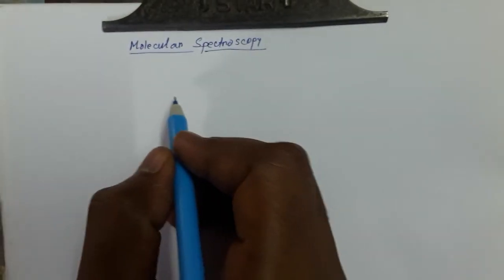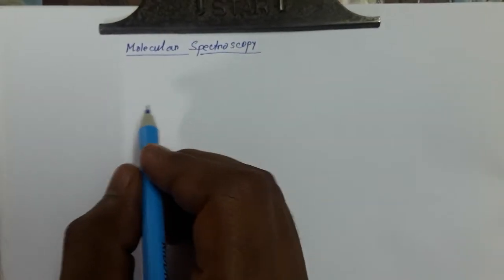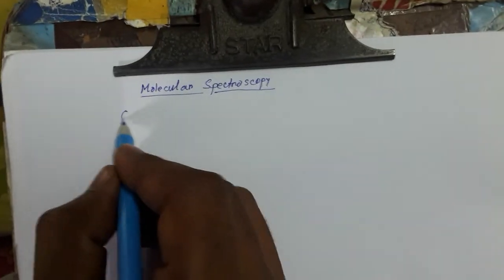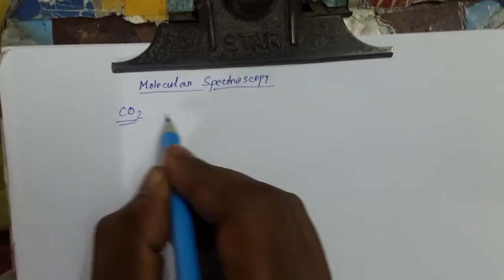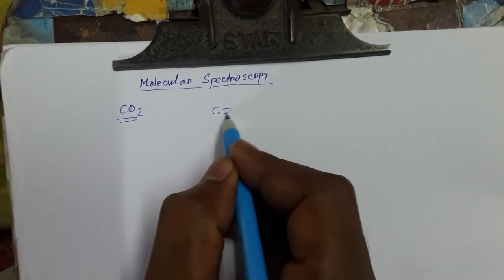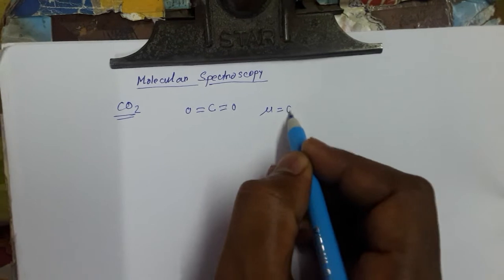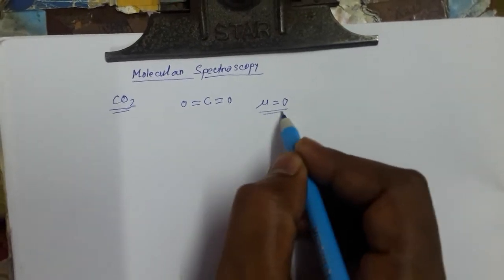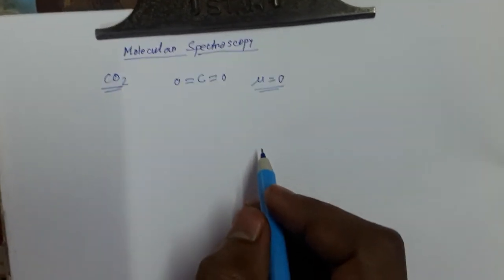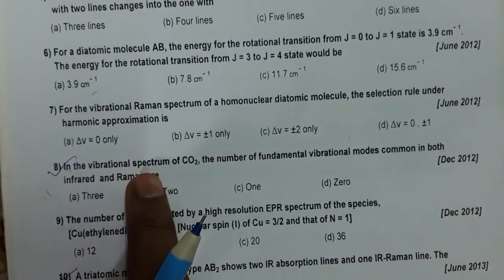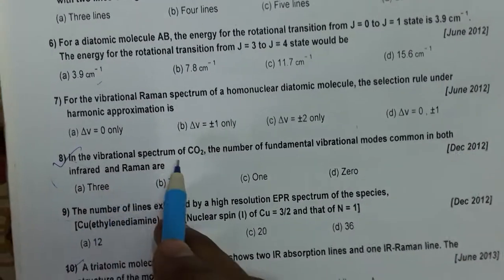Here I discuss the vibration spectrum of the CO2 molecule. CO2 is a linear molecule, so its permanent dipole moment is equal to zero — there is no permanent dipole moment.